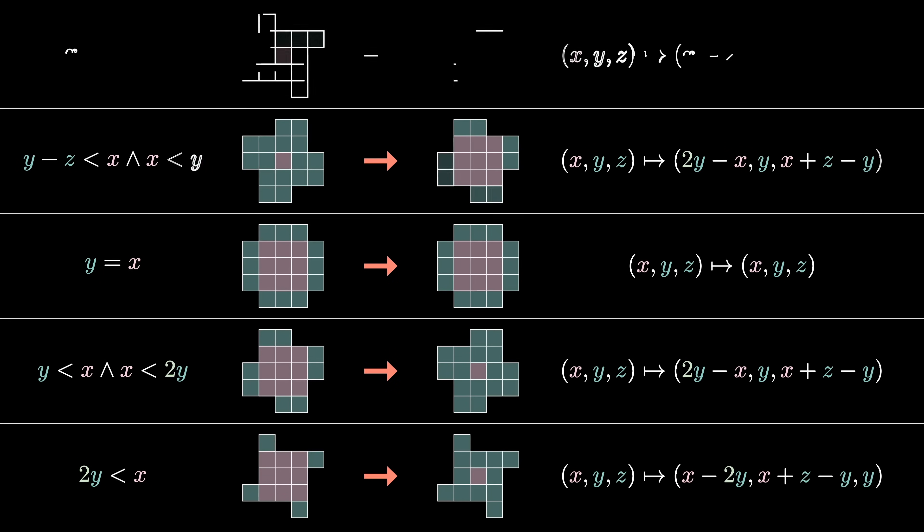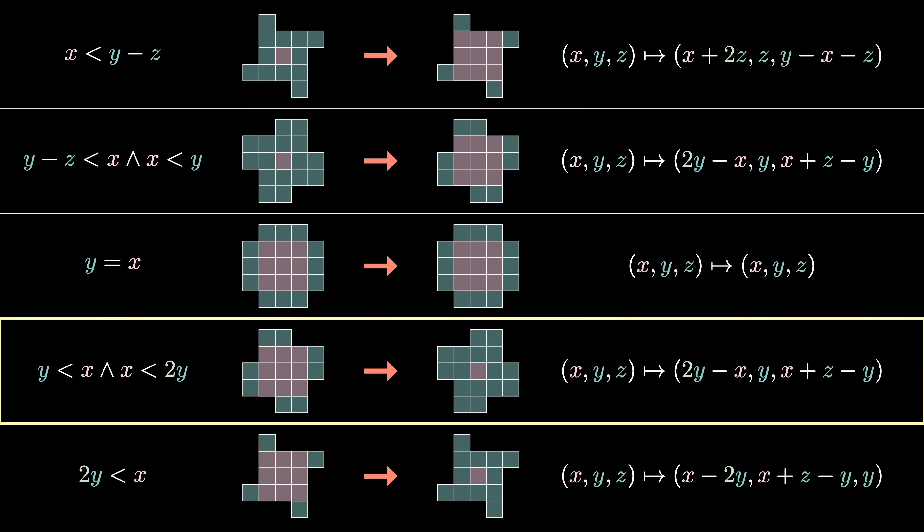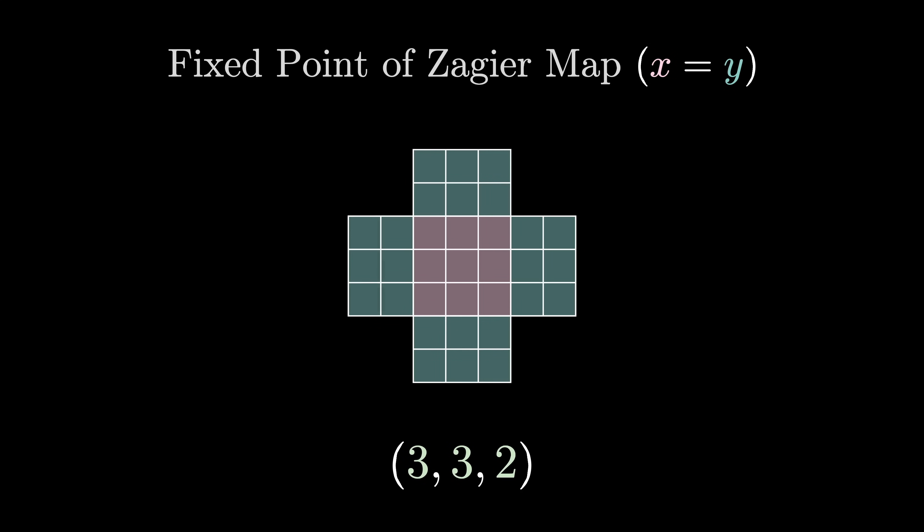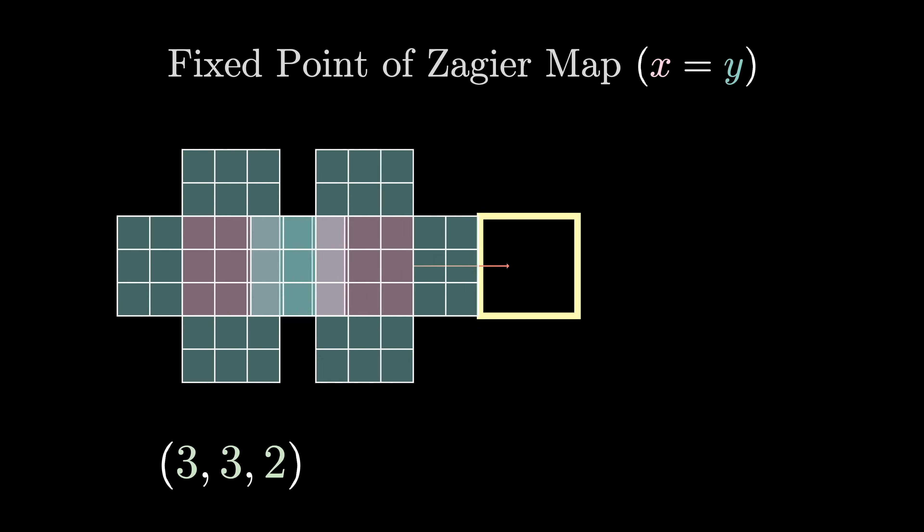Writing out the involution is just a matter of casework, and the Zagier map is in fact the large map you saw in that one-sentence proof. I've written it all out here, so feel free to pause and convince yourself that they work. The most important case, though, is when x = y. If x = y, there are no arms to extend, so this windmill becomes a fixed point of the Zagier map.